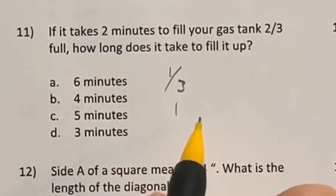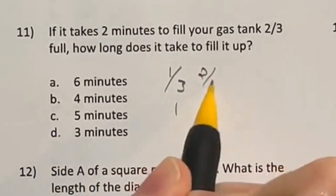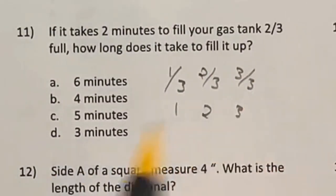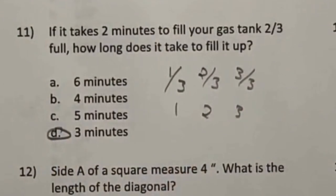So after one minute, we're at one-third. After two minutes, we're at two-thirds of the tank. And at three minutes, we'd be at three-thirds of the tank, which would be the whole thing. So three should be our final answer, D.